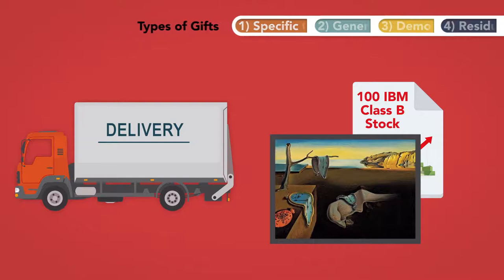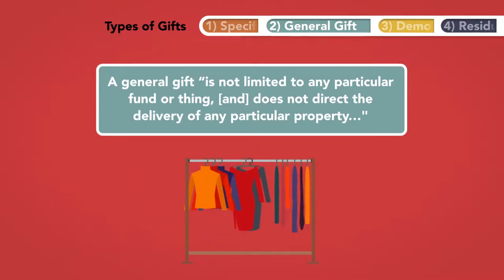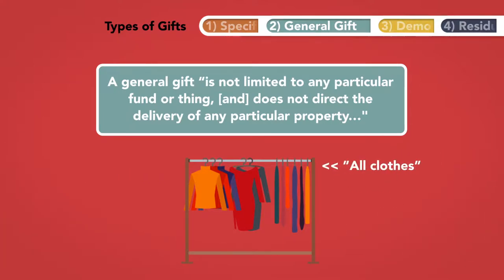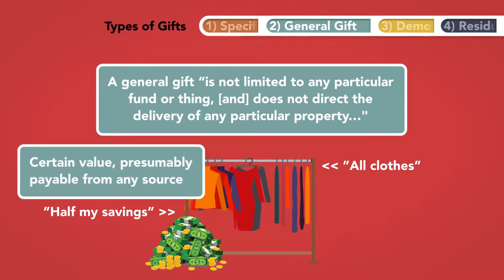2. General gift. A general gift is not limited to any particular fund or thing and does not direct the delivery of any particular property. It may be satisfied out of the general assets of the testator's estate and it does not consist of a particular thing subject to precise identification. It does, however, specify a quantity or amount to be paid of money or other personal property. An example of a general gift would be $10,000. The gift is of a certain value, presumably payable from any source.